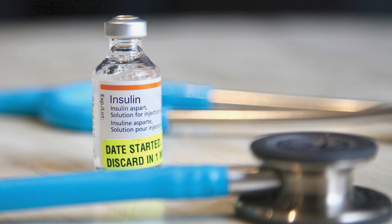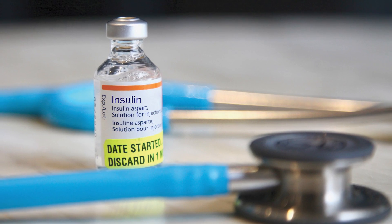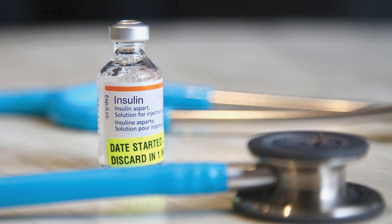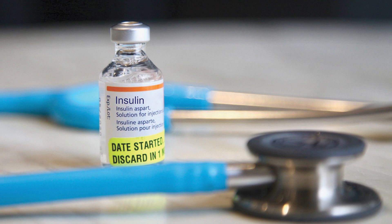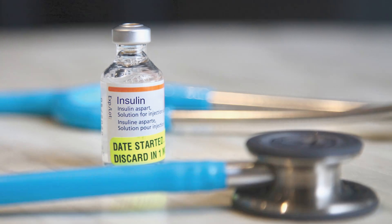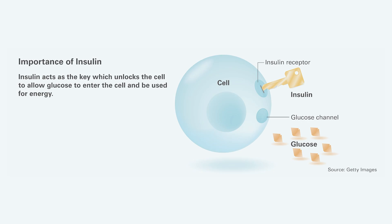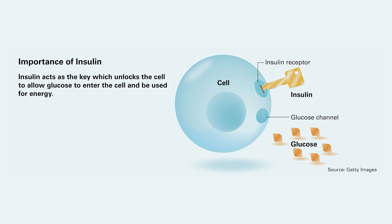When blood sugar levels are higher than normal, insulin therapy may be used to bring them down quickly. Insulin unlocks the cells of the body, allowing sugar or glucose to move from the bloodstream into the cells where it's used for energy.